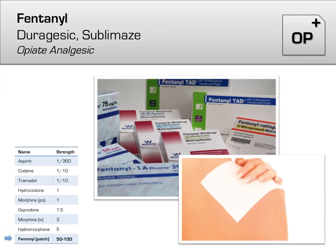The last of the classical opiates we will cover is fentanyl, the most potent of the opiates routinely used in clinical practice. This is due to its high fat solubility, as it can easily cross the blood-brain barrier and penetrate into the CNS. Fentanyl is commonly used today as a transdermal patch, which allows for slow release and long-term pain control. The fentanyl patch is often prescribed along with another oral opiate for breakthrough pain.